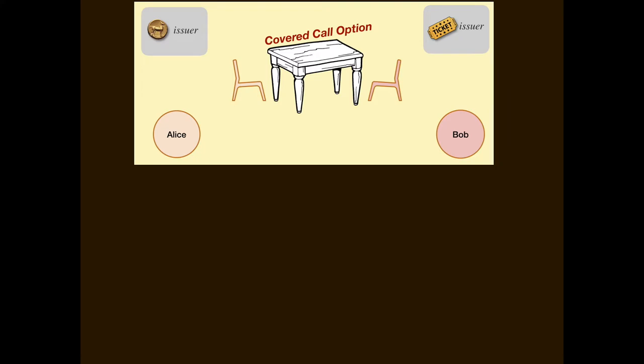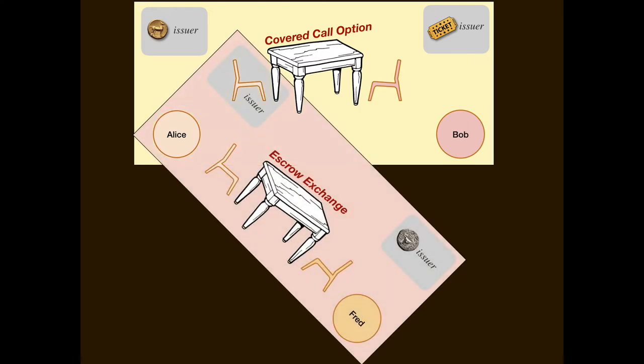The important thing about the covered call as an example is it's a contract that unfolds over time. Every contract that unfolds over time creates derived value. These two chairs on both sides of the table represent Alice's ability to participate in the covered call as the one who can buy the ticket, and Bob's ability to participate as the one who escrowed the ticket. Alice, until the contract expires, by sitting in this chair, is in a valuable position. We want to take that valuable position and turn it into a valuable, tradable right.